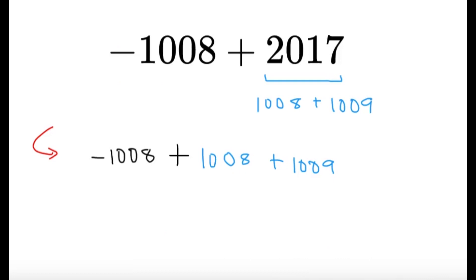Now, for some of you guys that might be struggling with adding with negative numbers involved, you can try to use 2017 here as just 1008 plus 1009. So like negative 1008 plus 1008 plus 1009. It's going to be a little bit obvious that this part cancels. So we're just left with just 1009.